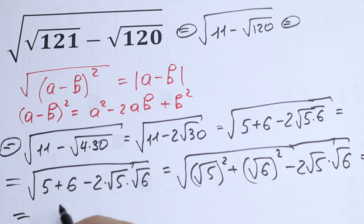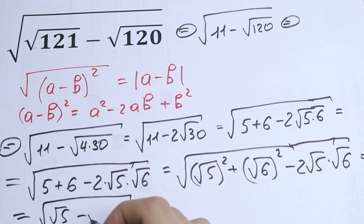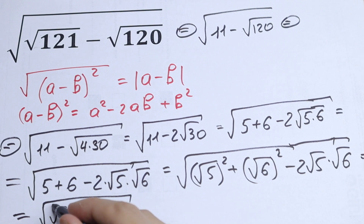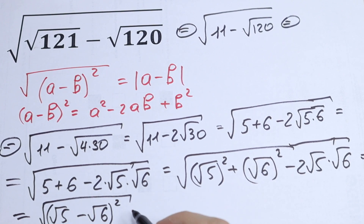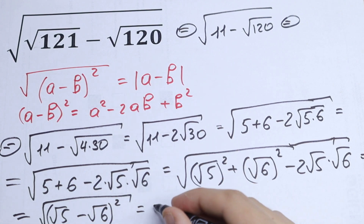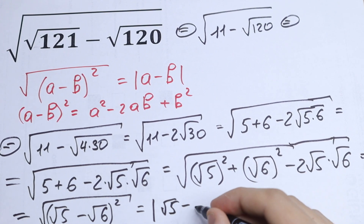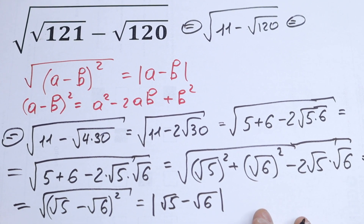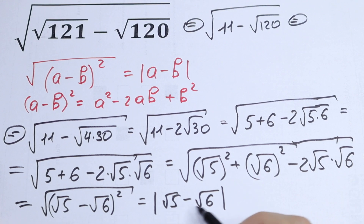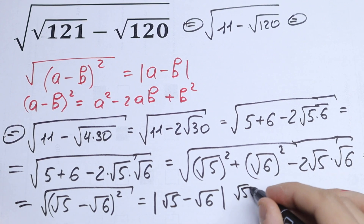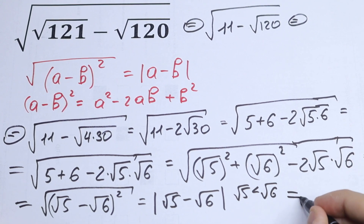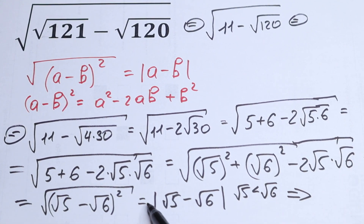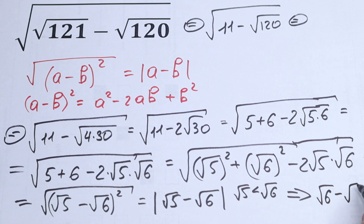This matches our (a minus b) form, so we can write this as the square root of (square root of 5 minus square root of 6) squared. As a result, we have the absolute value of (square root of 5 minus square root of 6). To simplify the absolute value, we note that the square root of 5 is less than the square root of 6, so we swap the values. Our final answer is: square root of 6 minus square root of 5.